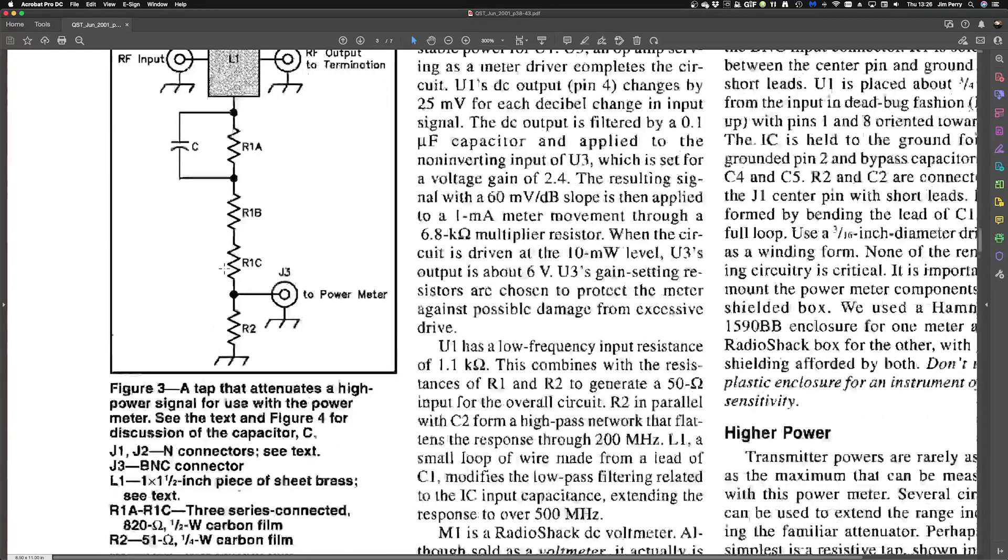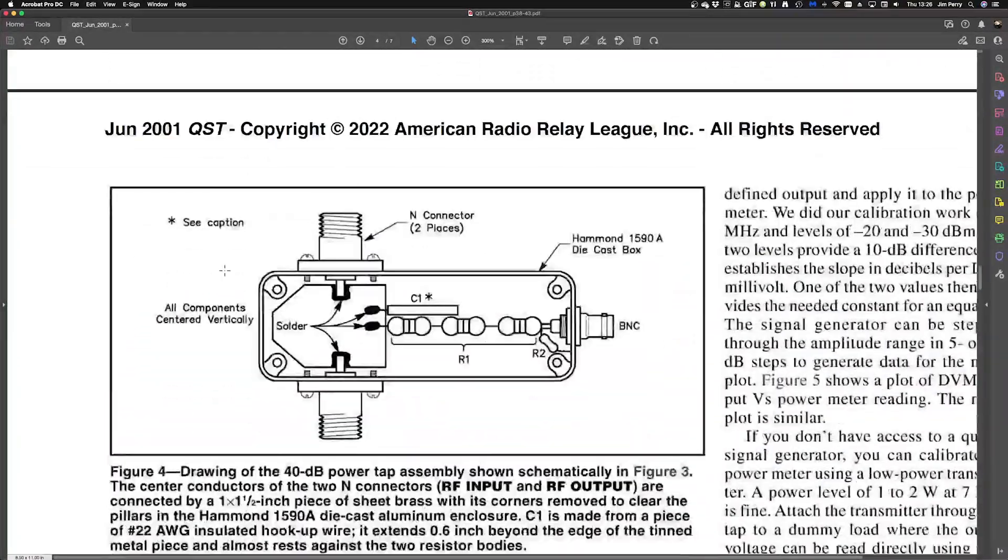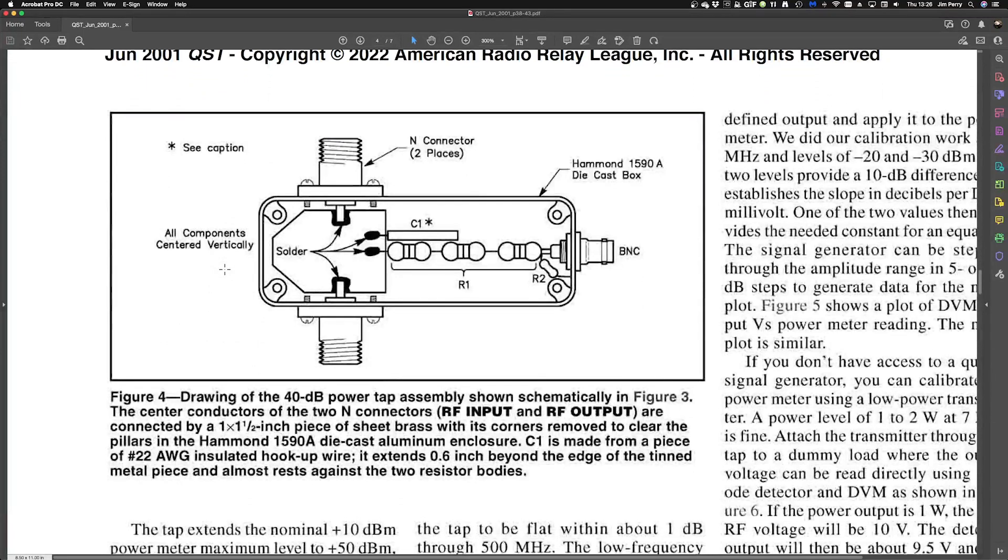So, they have, of course, a parts list of what they used and I tried to follow that. I had a few issues as you'll see when I show you my project, but we'll get to that in a minute. The device is pretty straightforward. The two connectors are fastened on either side of the project box. The center pins are connected to the brass plate and then the resistors in series and the special C1 wire. And, literally, it is a wire.